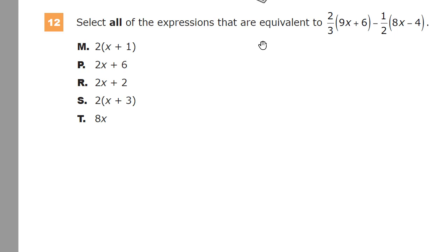Question number 12 asks me to select all of the expressions that are equivalent to 2 thirds times the quantity 9x plus 6 minus 1 half times the quantity 8x minus 4. So the first thing I'm going to do is do a little simplification work. I'm going to distribute this out. So what does that look like?